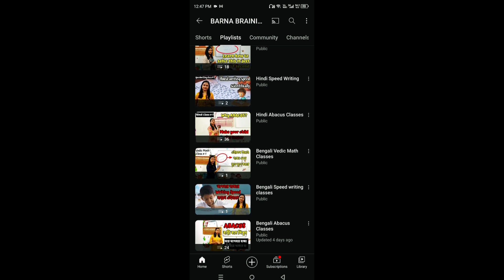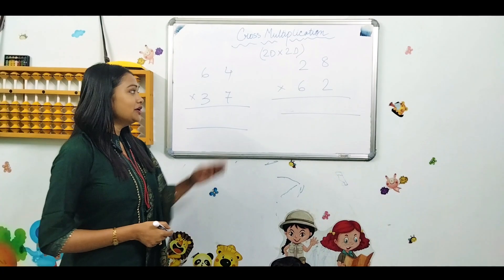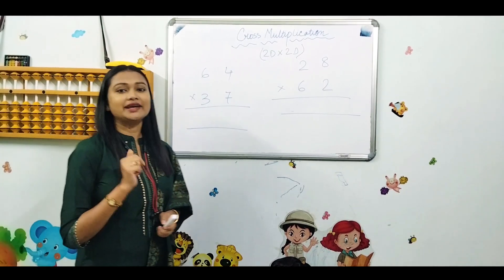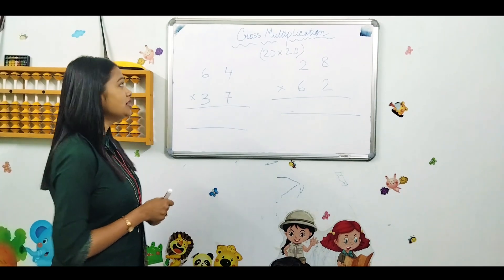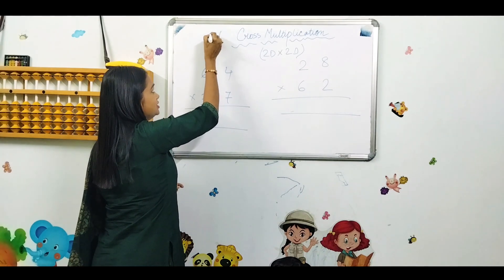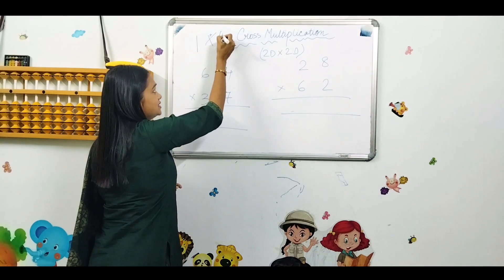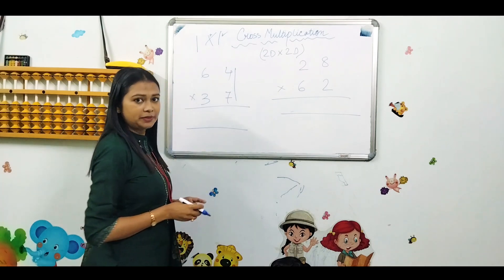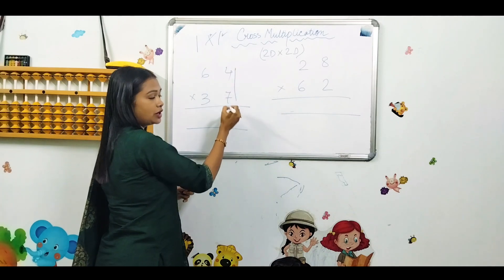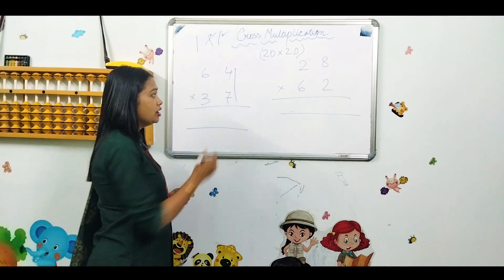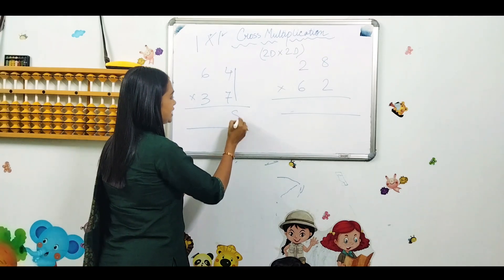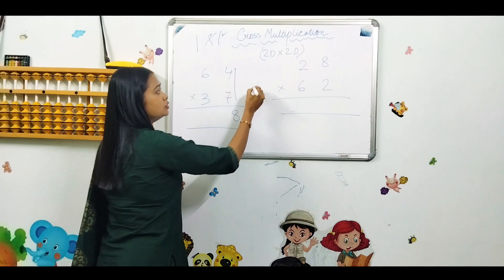Cross multiplication kibhaave korte hoi — cross multiplication er kichu sign chai, shegulo bolhe di. Double digit into double digit e cross multiplication e sign holo this cross and addition. Then this line means these two numbers you have to multiply. Dekhen je duto nambara chhe shetar multiplication kora — toh 7 into 4 amara jani that is 28, toh 28 ir 8 ami likla aar amar keri thaklo 2.